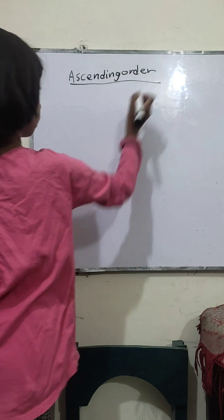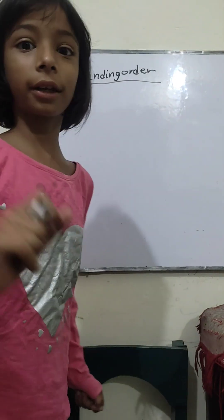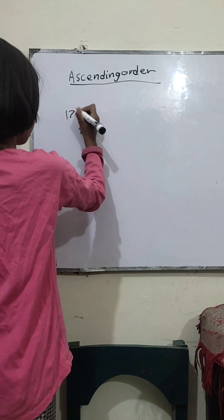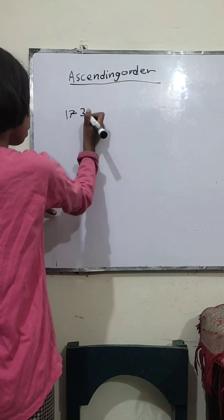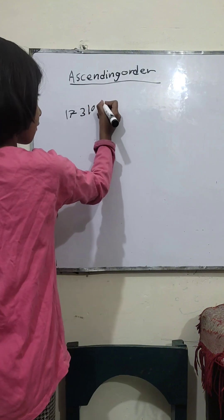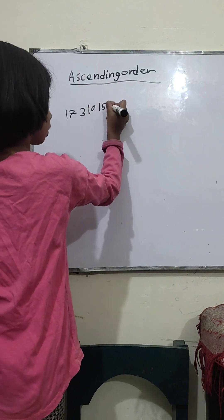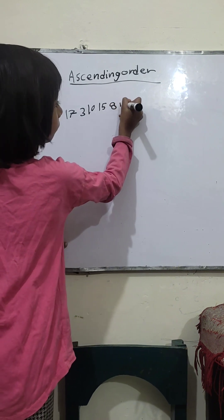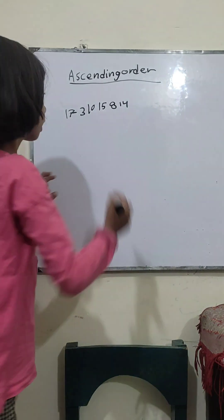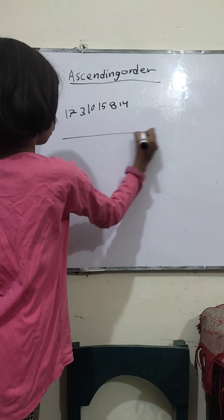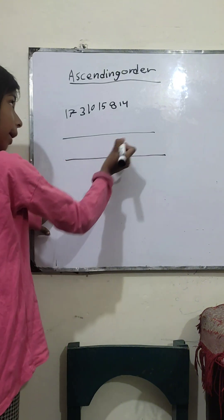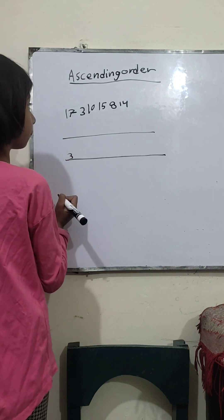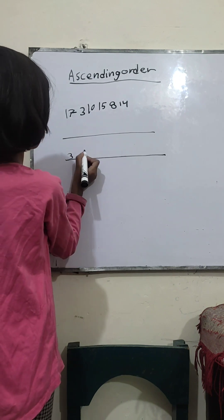This is the Ascending Order. We will show the Ascending Order. Now we will write 8.